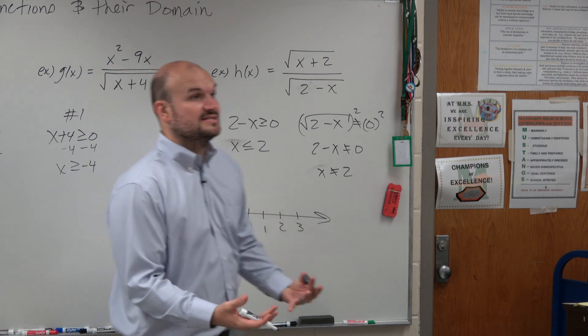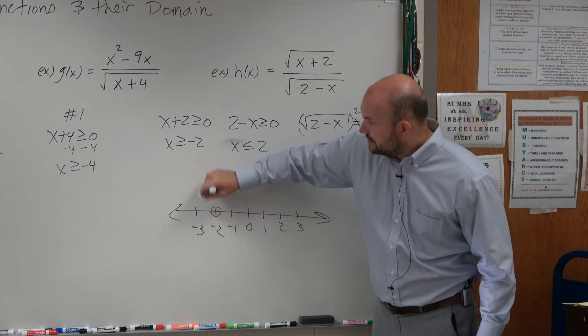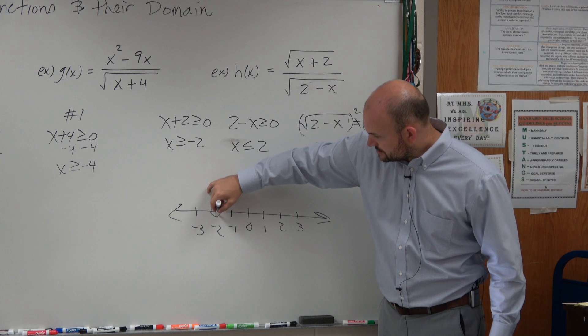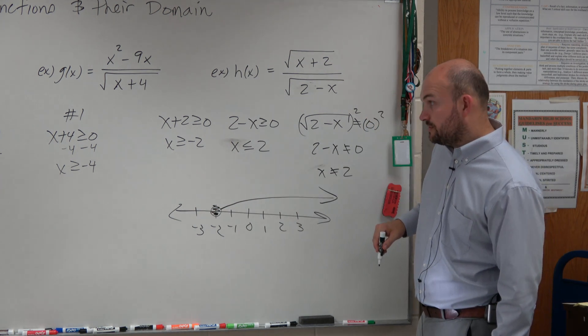So let's graph these separately. First one, x is greater than or equal to negative 2, so you go to negative 2. Is negative 2 included? Yes. Fill it in. All numbers greater than negative 2 are going to the right.